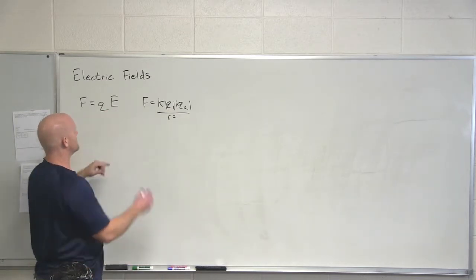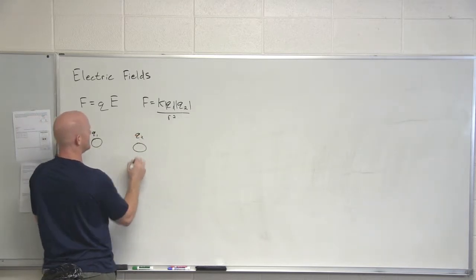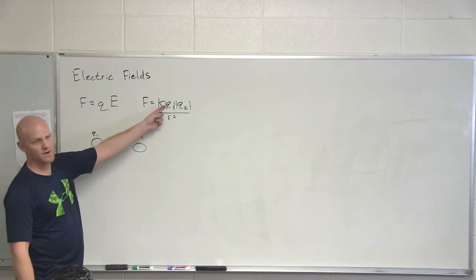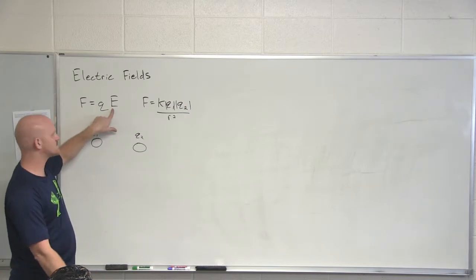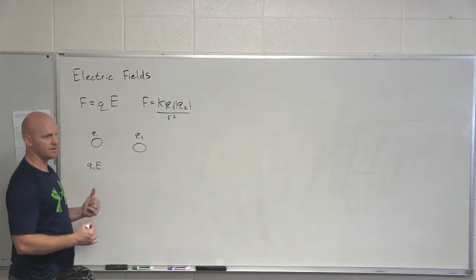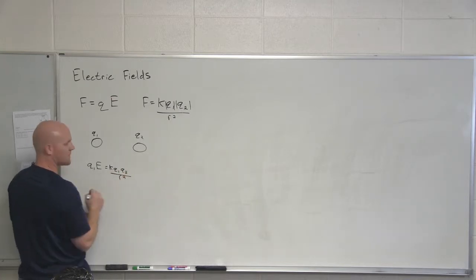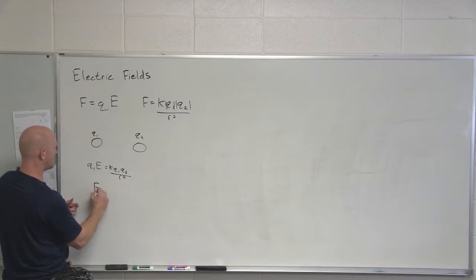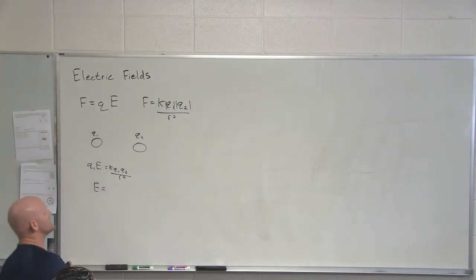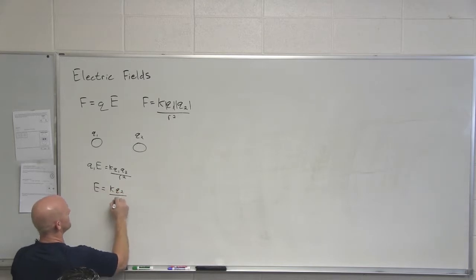So if we look at how that compares to this equation — let's say we have Q1 and Q2 here, and I say, what's the force that Q1 feels? Well, if I look at it from this perspective, it's Q1 times some electric field. But this is also equal to KQ1Q2 over R squared. And I can use this to derive what must be the electric field — the magnitude of it in this case. We get KQ2 over R squared.